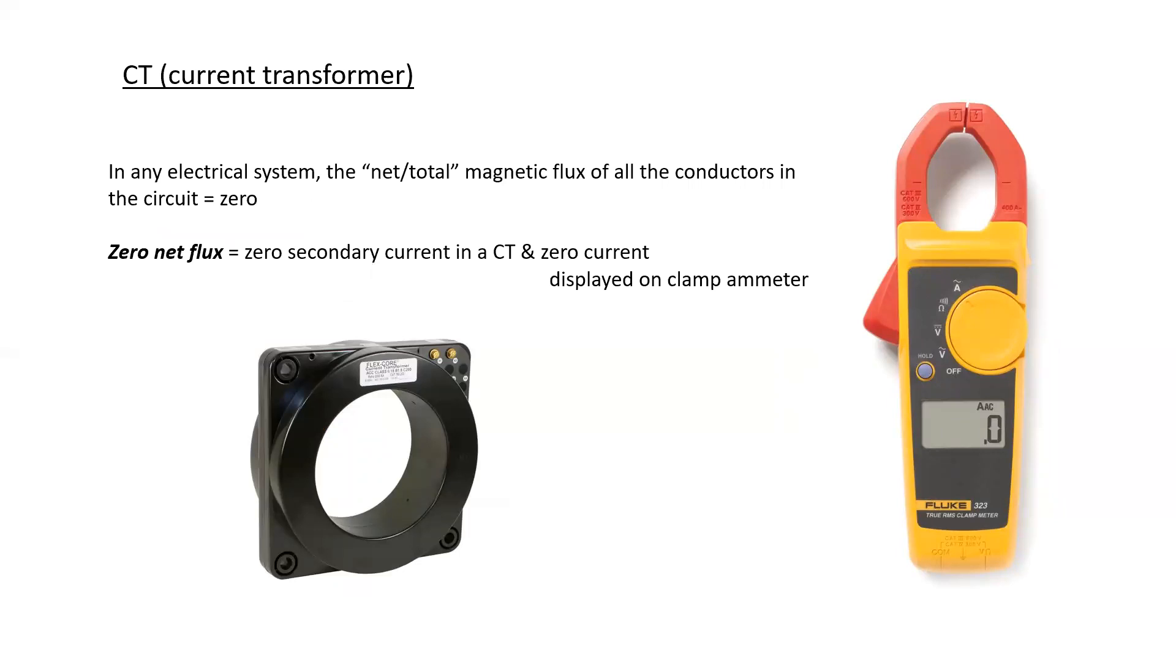For baseline, in any electrical circuit, the net total magnetic flux of all the conductors in the circuit will equal zero. And what this means is that zero net flux will result in zero secondary current in a CT, or zero current displayed on a clamp ammeter.